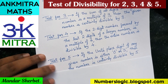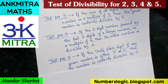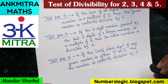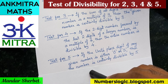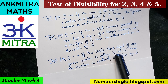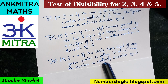The test for 5 is probably easier than the test for 2. If we look at the multiples of 5 — the table of 5 — it goes: 5, 10, 15, 20, 25, 30, 35, 40, and so on. All multiples of 5 have either the digit 0 or 5 in the units place. So if the units place digit of any given number is either 0 or 5, then the entire number is certainly divisible by 5.